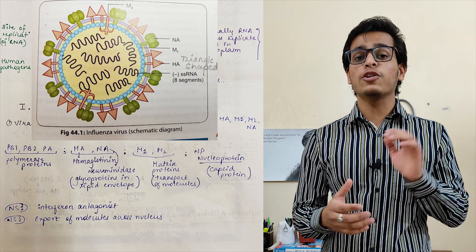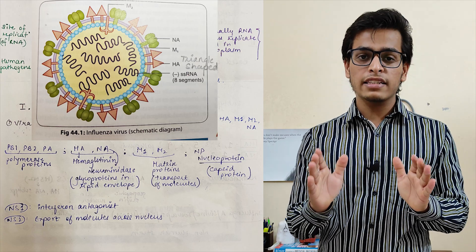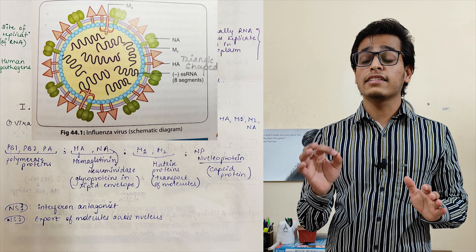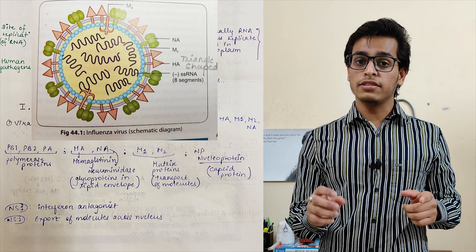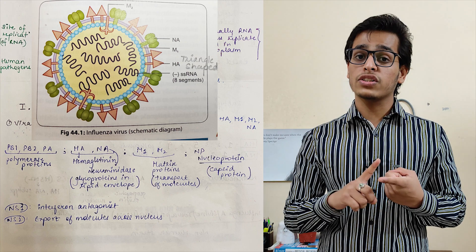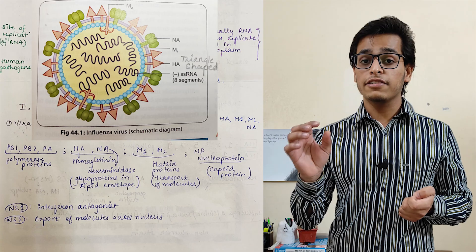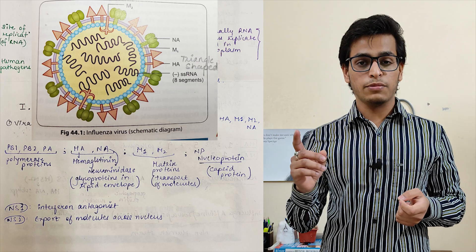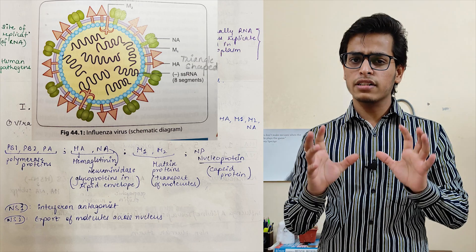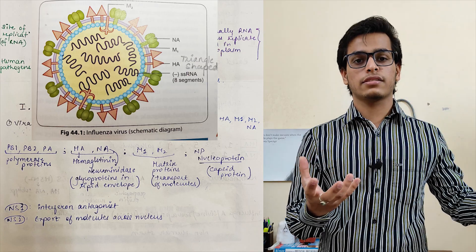After that we have non-structural proteins. You may hear that these are not important, but yes, they are very important. Number one is NS1 — non-structural protein 1 — which is your interferon antagonist. The second one is NS2, which helps in the transport of molecules across the nucleus.